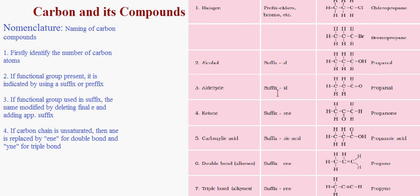For example, we take propanol. The base name is propane, spelled P-R-O-P-A-N-E. Since alcohol is added as a suffix, we drop the 'e', leaving P-R-O-P-A-N, and add '-ol' to it. So we get propanol. In this way the nomenclature is done.